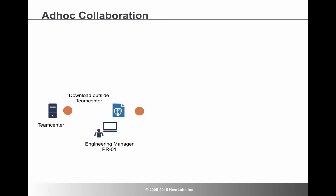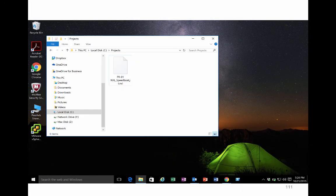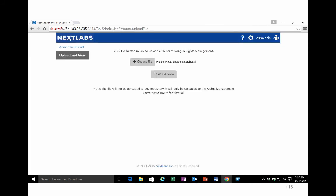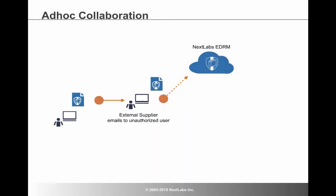It might be the case that engineers need to share files with external users not just as part of a formal workflow or process, but in ad-hoc fashion. Let's consider how NextLabs EDRM supports this requirement. For a NextLabs rights-protected file downloaded outside of TeamCenter that needs to be shared with an external supplier, you simply attach the file to an email and send it to the external authorized user. This user can save the file locally and upload it to NextLabs EDRM to view it securely. You don't have to worry about misdirected emails — if the file falls into the hands of an unauthorized user, the user will be unable to open the file.